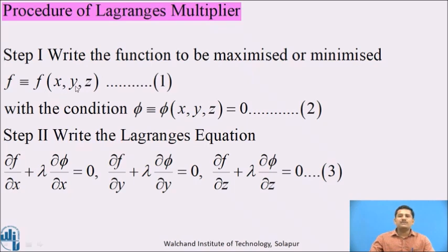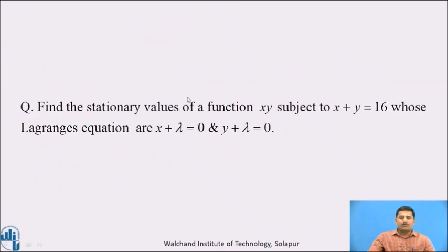If we substitute these stationary values into equation 1, we will get the extreme — that is, maximum or minimum — value of this function subjected to the given condition. Now pause this video and find the stationary value of the function x·y subjected to the condition x + y = 16, where the Lagrange's equations are x + λ = 0 and y + λ = 0.